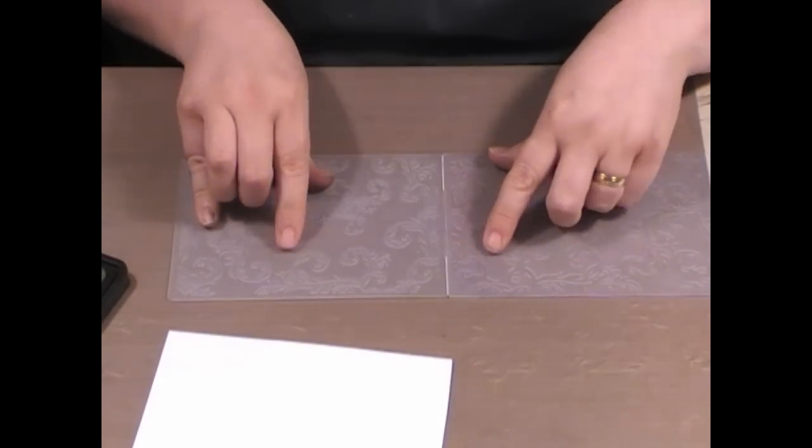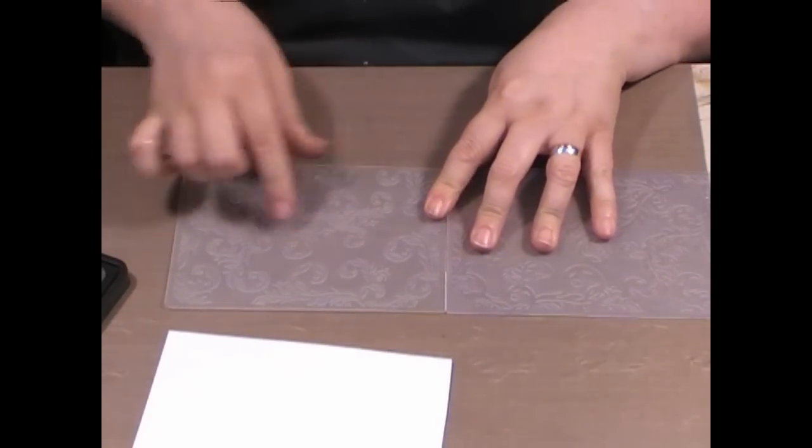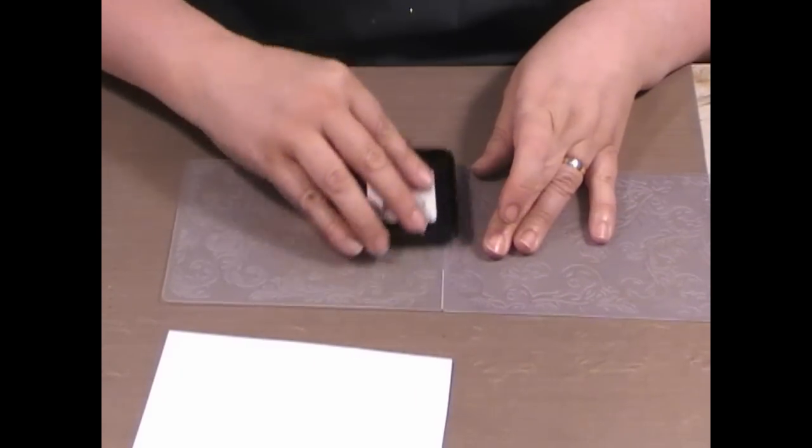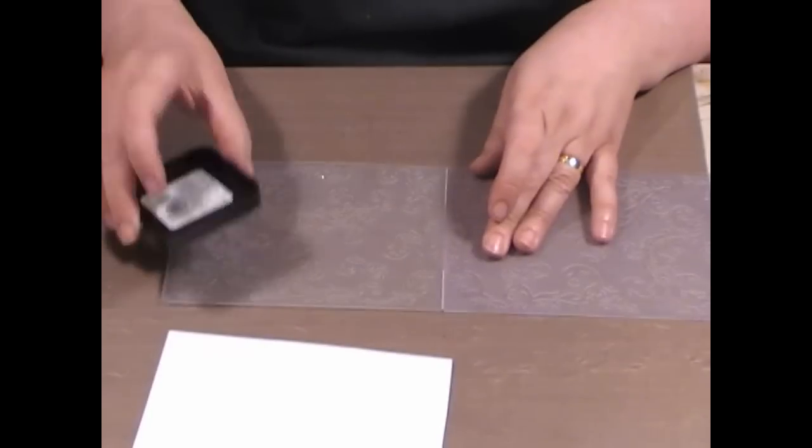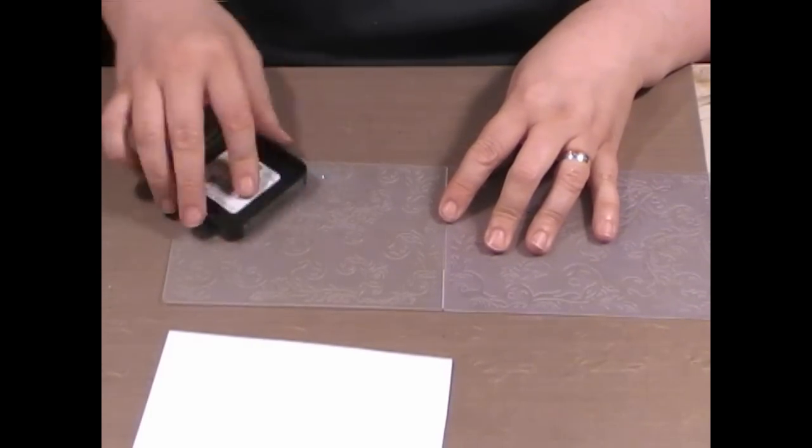I'm going to ink up the actual folder, the raised bit. This is the positive, that's the negative. Feel across them. I'm just going to go ahead with my distress ink and just go over the whole thing. I'm using antique linen.